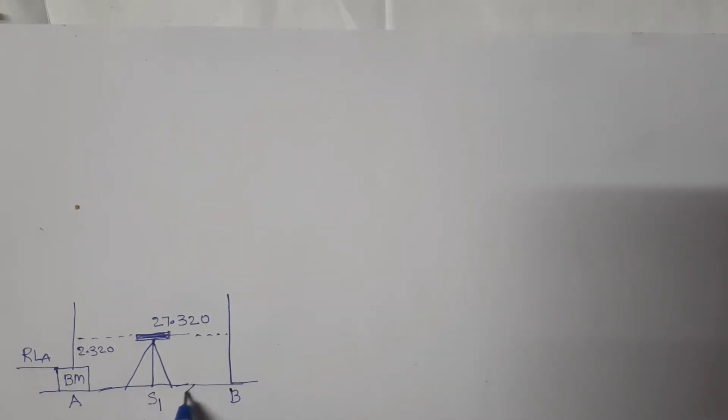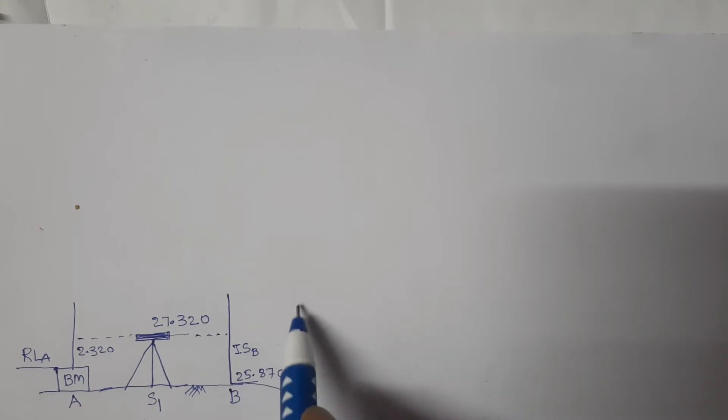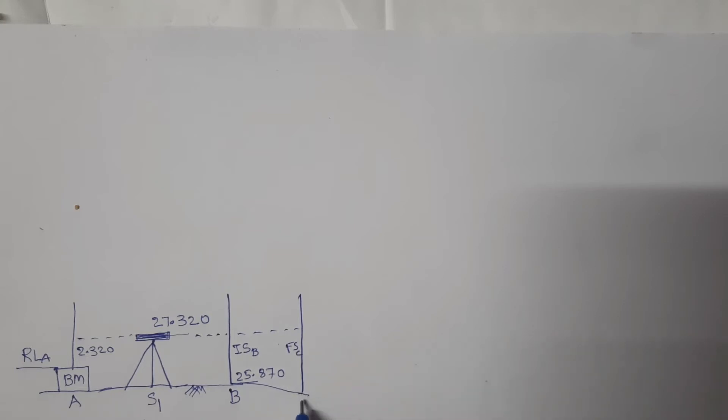Now observe the staff readings on B. The RL of B is given as 25.870 — it is the intermediate sight on B. On C point, the foresight reading is not known to us, but the RL of C is given, which is equal to 23.670.